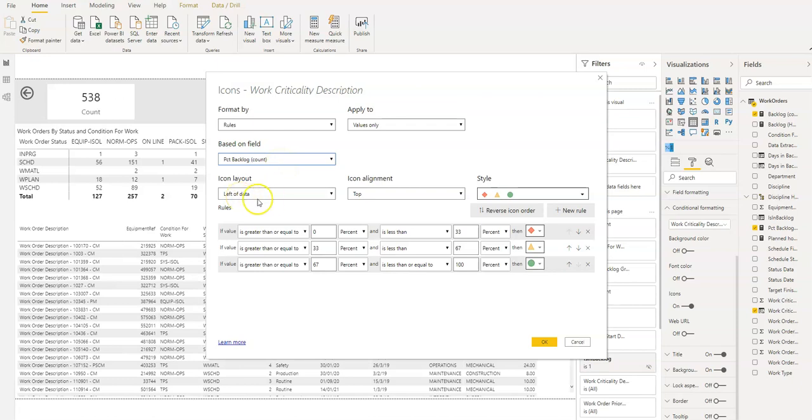We're going to display the icon on the left of the column text and center that. Then the default here is to show the values if it's greater than 0% or less than 33%, breaking into almost like thirds. We want to change that so that the smaller the value the better. Remember this is overdue work we don't want overdue work, so we're going to reverse the order. If anything is below 33% it's green, if anything is between 33% and 67% it's yellow, and if it's above 67% it's going to be red.